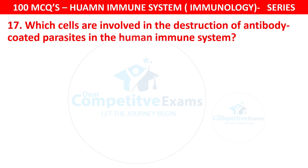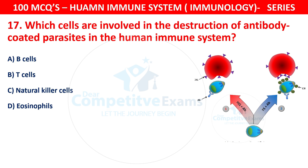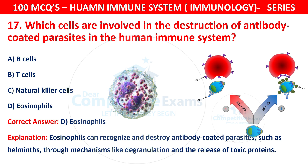Question 17. Which cells are involved in the destruction of antibody-coated parasites in the human immune system? The options are B cells, T cells, natural killer cells, or eosinophils. The correct answer is D — eosinophils. Eosinophils can recognize and destroy antibody-coated parasites such as helminths through mechanisms like degranulation and the release of toxic proteins.